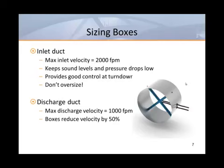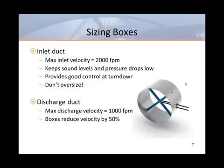As far as discharge duct work, I like to think of boxes as devices that reduce velocity by 50%. If you have 2,000 feet per minute going in, you shouldn't have more than 1,000 feet per minute coming out. Discharge duct work should therefore be sized for no more than 1,000 feet per minute. In cases where grills will be tapped directly into the sides of the discharge duct, I would design for no more than 800 feet per minute to prevent the possibility of room air being induced into the first few grills.